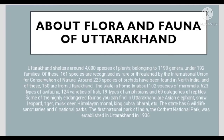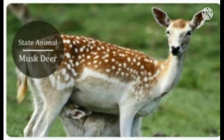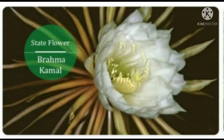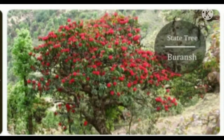Uttarakhand has around 4000 plant species and is home to about 102 species of mammals, 124 varieties of fish, and 69 categories of reptiles. The state animal is the Musk Deer, state bird is the Monal, state flower is the Brahmakamal, and the state tree is the Buran.